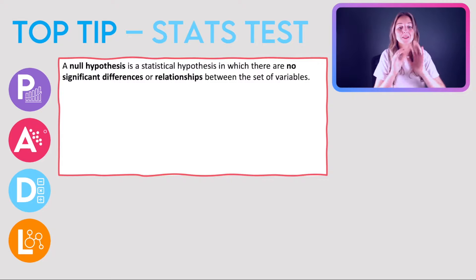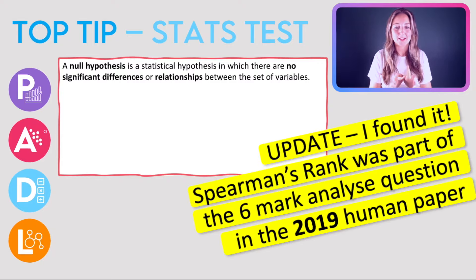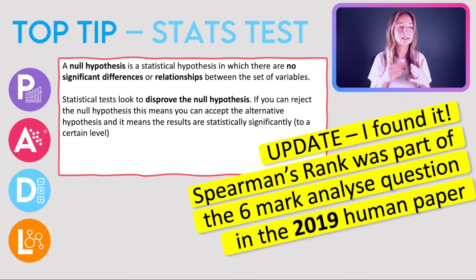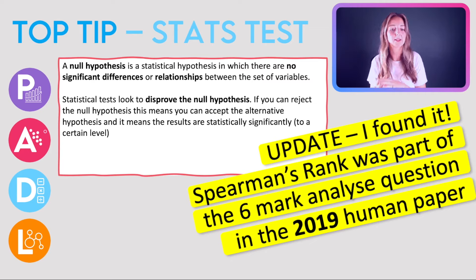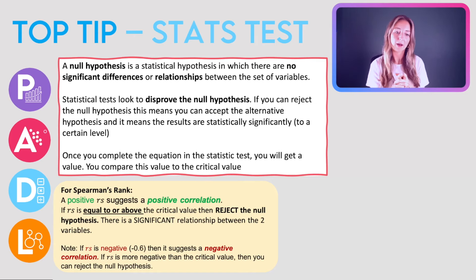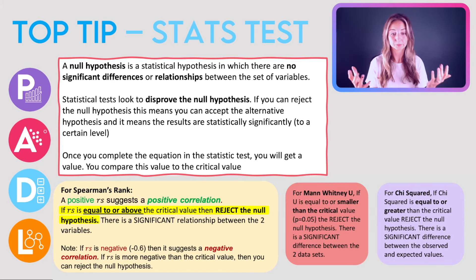My final tip is for stats tests. A null hypothesis is a statistical hypothesis stating there are no significant differences or relationships between sets of variables. Statistical tests look to disprove the null hypothesis — if you can reject it, you can accept the alternative hypothesis, meaning results are statistically significant at perhaps 95% or 99%. The most likely test you'd encounter is Spearman's rank: compare r to the critical value, and if it is equal to or above it, you can reject the null hypothesis and say the result is statistically significant.